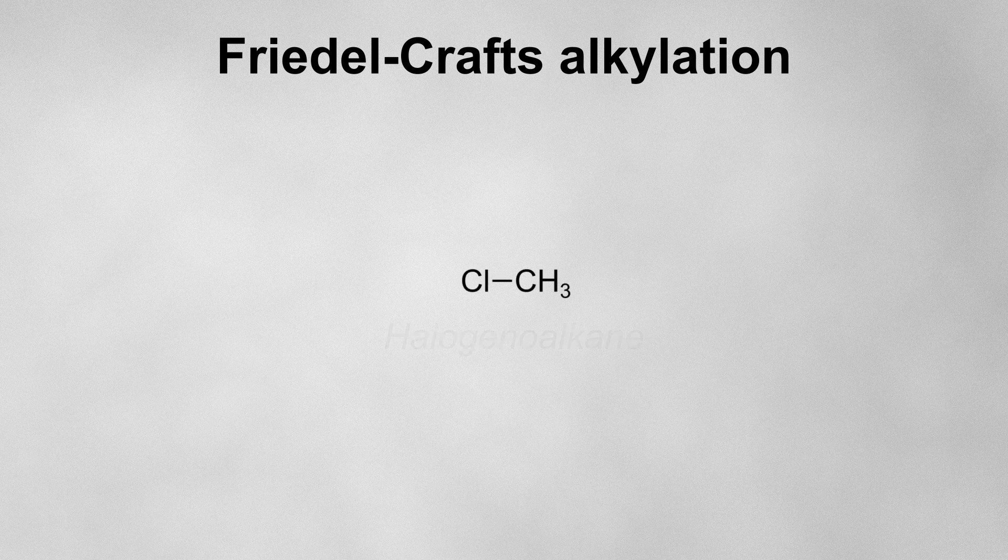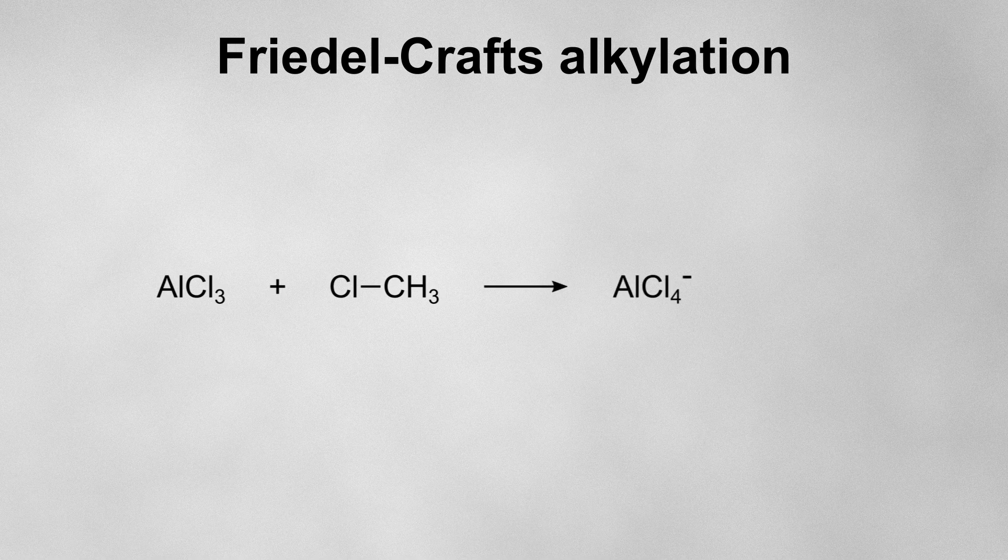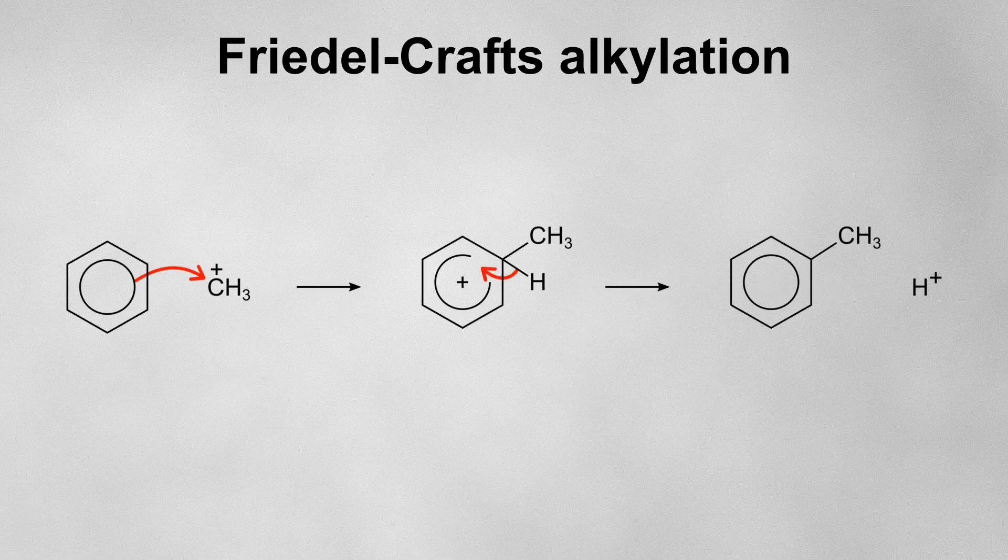Just like before, in order to generate the electrophile, we need to react it with a halogen carrier. Again, the halogen carrier takes a halide ion for itself and leaves behind a positively charged electrophile. Now, this will be electrophilic enough to initiate an electrophilic substitution.